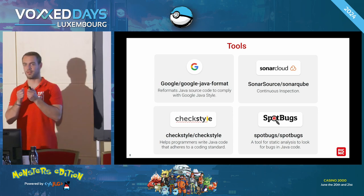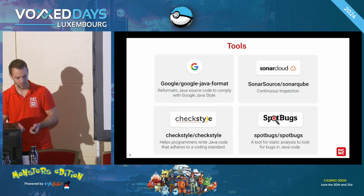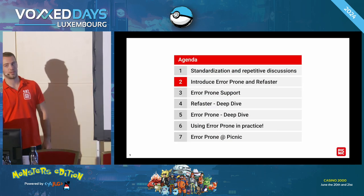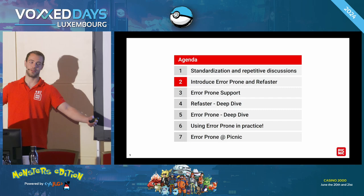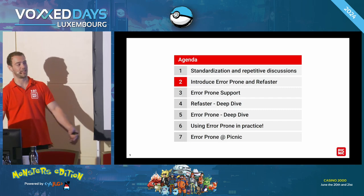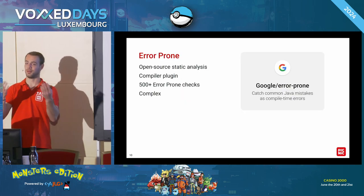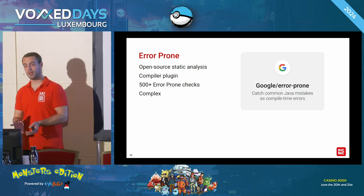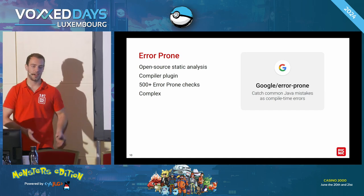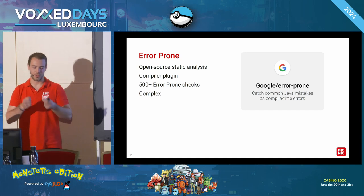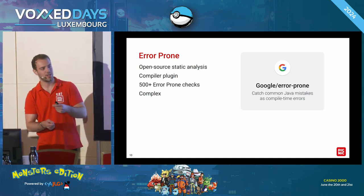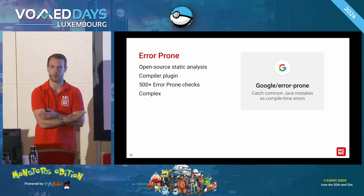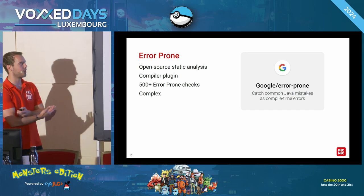That brings us to my favorite part — allow me to introduce you to Error Prone. What is Error Prone? Error Prone is a static analysis tool for Java. It can not only find and detect bugs in your code, but it can also automatically apply fixes for you.